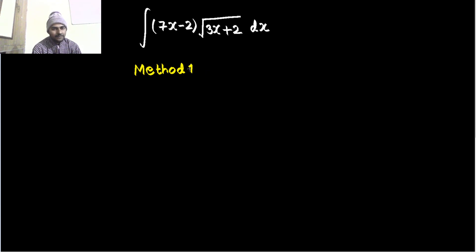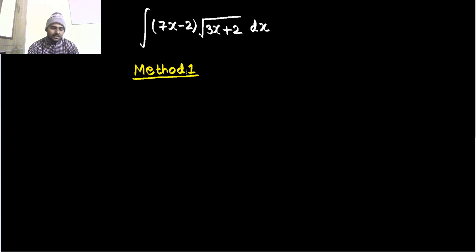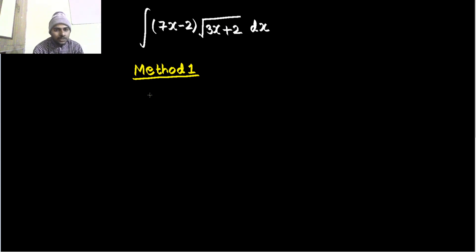You can choose any of them. In method one, in both methods, our focus will be to write the outer linear expression similar to the inner linear expression. That means 7x minus 2, I would like to modify to 3x plus 2. Let's see how. I have 7x minus 2 and I want to make it like 3x plus 2.